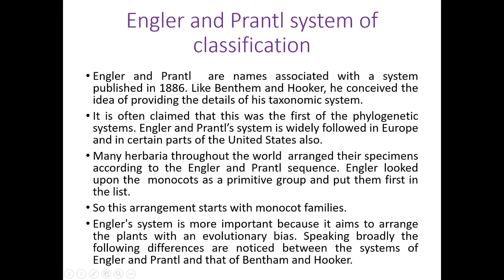In the outline, angiosperm is classified into two classes: monocotyledonae and dicotyledonae. But Engler placed monocots as the primitive group and dicots as the advanced group. Engler's system is more important because it aims to arrange the plants with an evolutionary basis. Speaking broadly, the following differences are noticed between the system of Engler and Prantl and that of Bentham and Hooker.